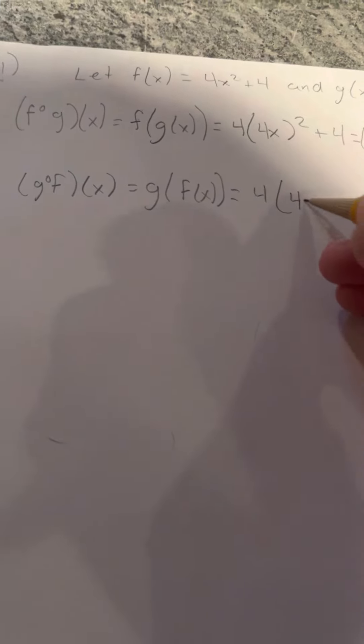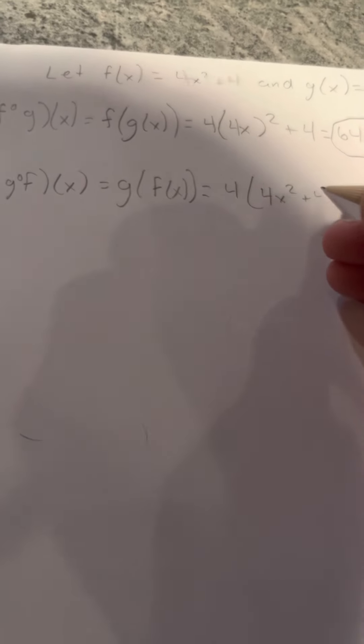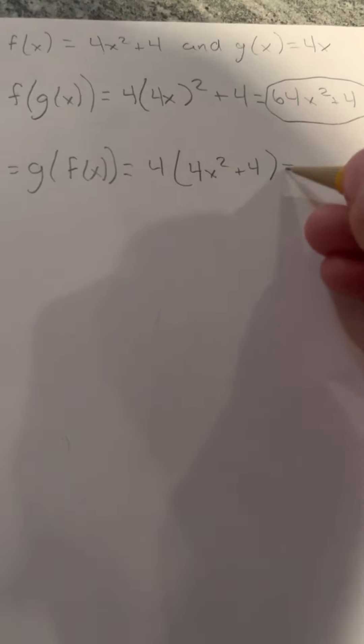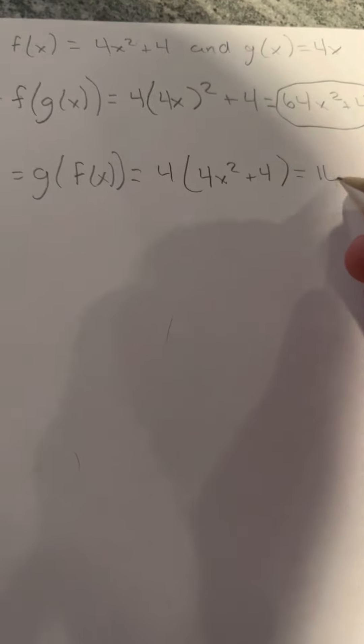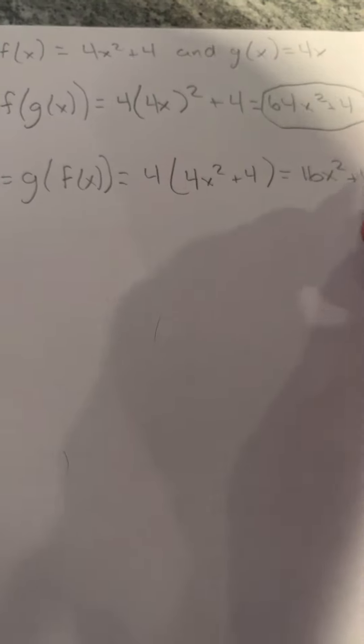Since g is 4x, you bring down 4. Since f is on the inside, you bring down 4x squared plus 4. So it's 4(4x squared plus 4). Now you just distribute: 4 times 4x squared is 16x squared, and 4 times 4 is 16. So the answer to g∘f is 16x squared plus 16.